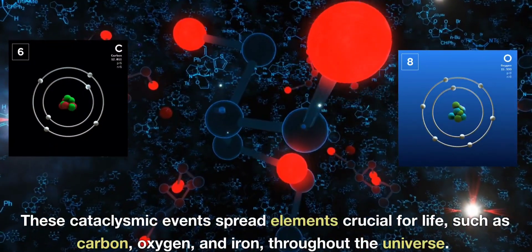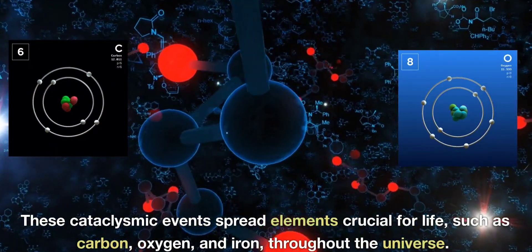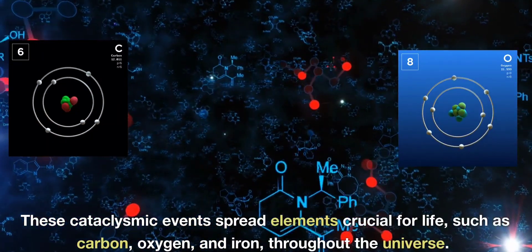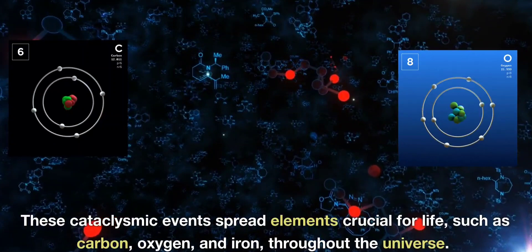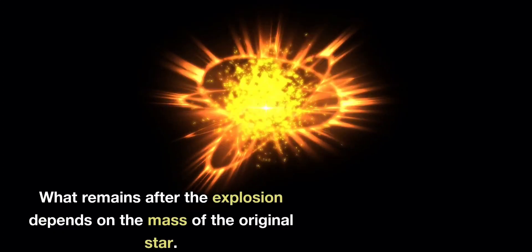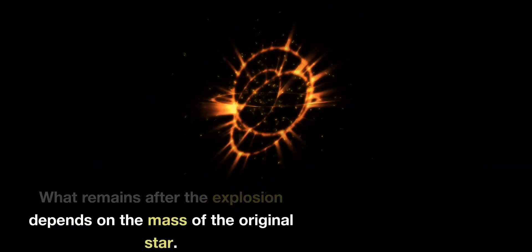These cataclysmic events spread elements crucial for life, such as carbon, oxygen, and iron, throughout the universe. And what remains after the explosion depends on the mass of the original star.